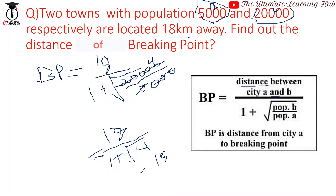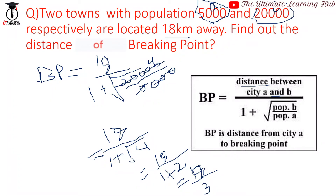So we have 18 divided by 1 plus the square root of 4. The square root of 4 is 2, giving us 18 divided by 1 plus 2, which equals 18 divided by 3, which equals 6 kilometers.